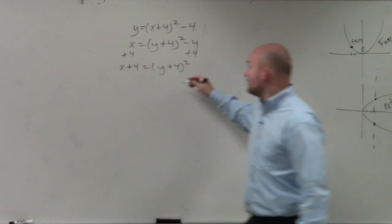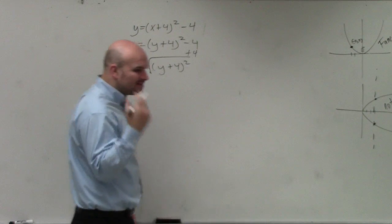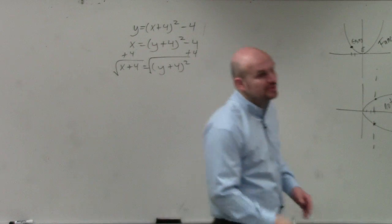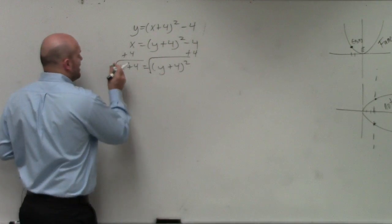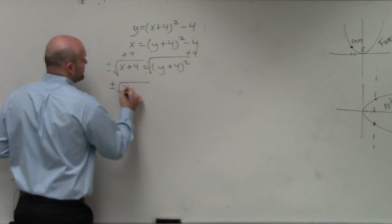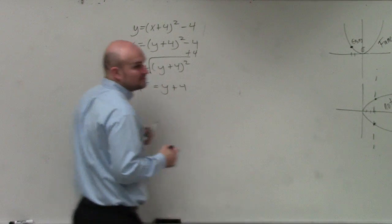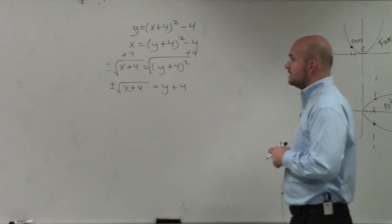Then I need to make sure I undo the squaring before I can get inside the parentheses. So I take the square root of both sides. Please remember, when you introduce the square root, you have to do the plus or minus. So I have plus or minus the square root of x plus 4 equals y plus 4.